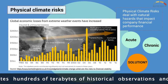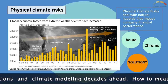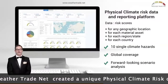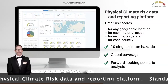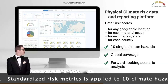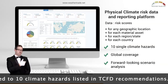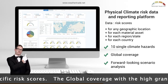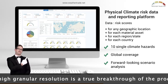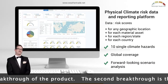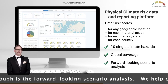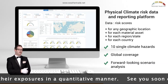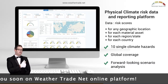Physical climate risk data incorporates hundreds of terabytes of historical daily observations and climate modeling decades ahead. Weather TradeNet created a unique physical climate risk data and reporting platform. Standardized risk metrics are applied to 10 climate hazards listed in TCFD recommendations. We provide location-specific risk scores with global coverage at high granular resolution. The second breakthrough is the forward-looking scenario analysis. We help companies get a handle on their exposures in a quantitative manner. See you soon on the Weather TradeNet online platform.